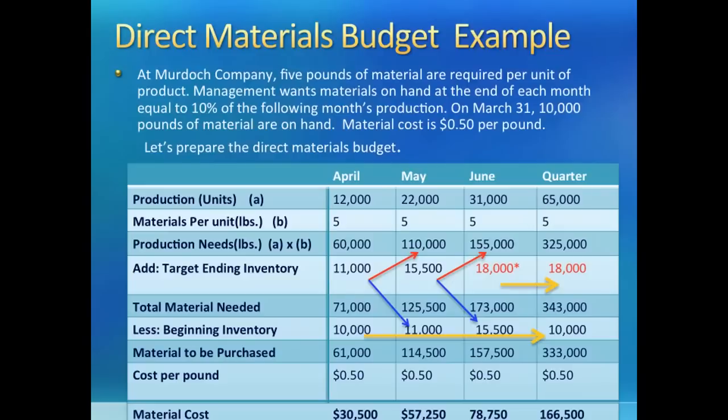In the end, we multiply the units of raw material by the price per unit to get the cost for raw material purchases for each month and then for the quarter. We still have the issue of the $18,000 of desired inventory units in June. You can try to get it yourself before you turn the slide.